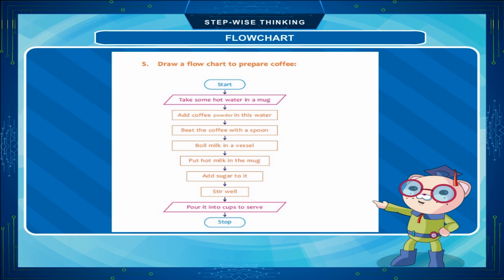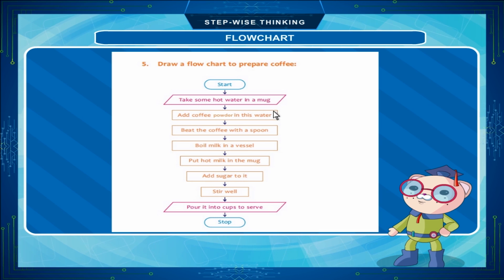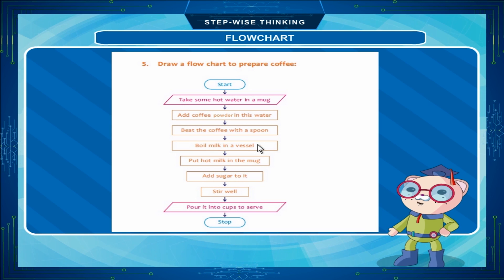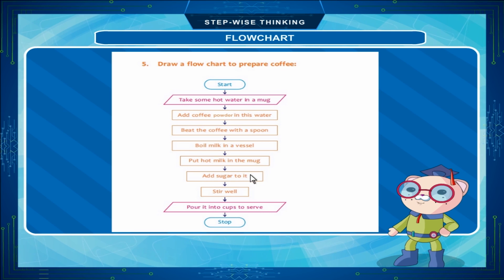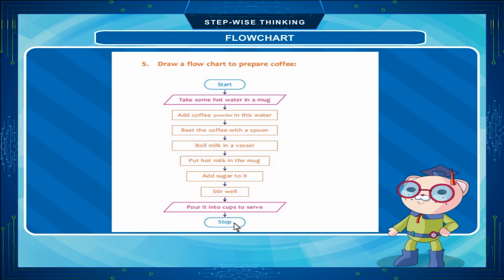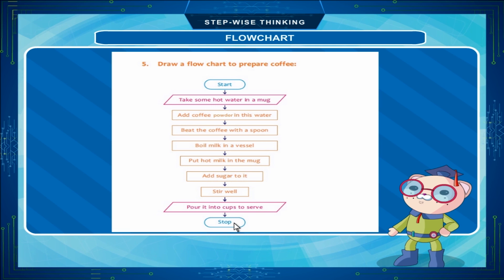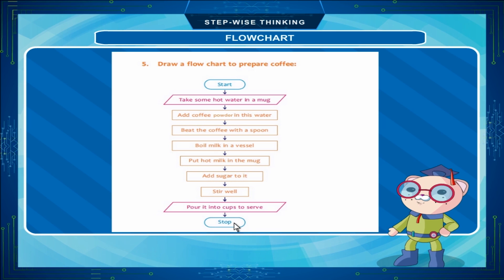Example 5: Draw a flowchart to prepare coffee. Start → Take some hot water in a mug → Add coffee powder in this water → Beat the coffee with a spoon → Boil milk in a vessel → Put hot milk in the mug → Add sugar to it → Stir well → Pour it into cups to serve → Stop. Thus, it is clear that it is easy to draw a flowchart and plan the final steps instead of directly writing the program and making changes in it.